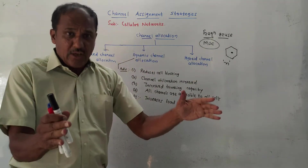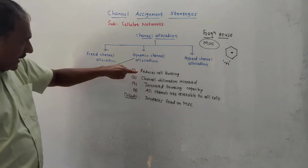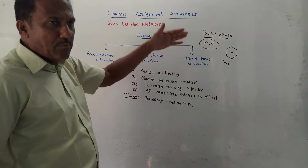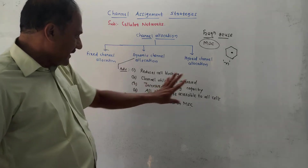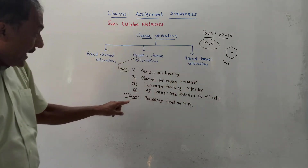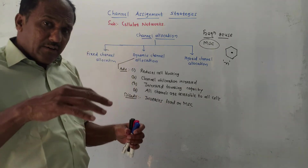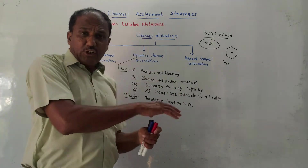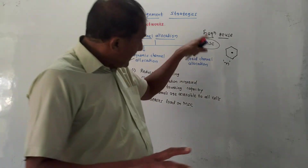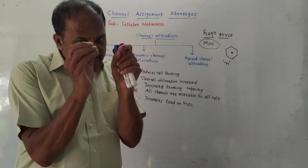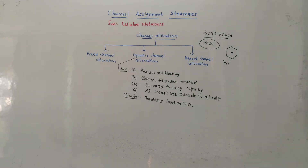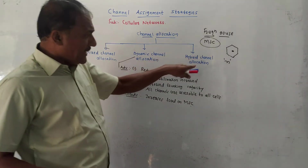Advantages of dynamic channel allocation: it reduces call blocking, since it is a dynamic system. Second, channel utilization is increased because more options are available. Third, ranking capacity is increased, and all channels are accessible to all cells — no fixed allocation. The disadvantage is that every time a call is made, the MSC must search for a free channel, which increases the load on the MSC and requires availability of real-time data and algorithms.